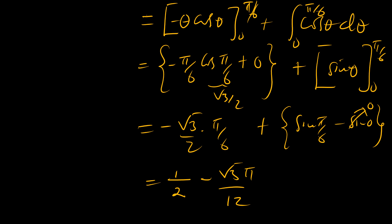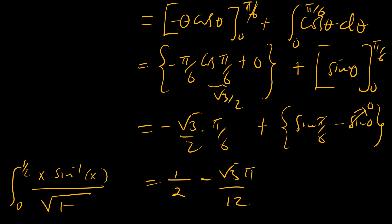So the initial integral from 0 to one half of x times sine of x over square root of 1 minus x squared equals one half minus root 3 pi over 12. That is our answer.